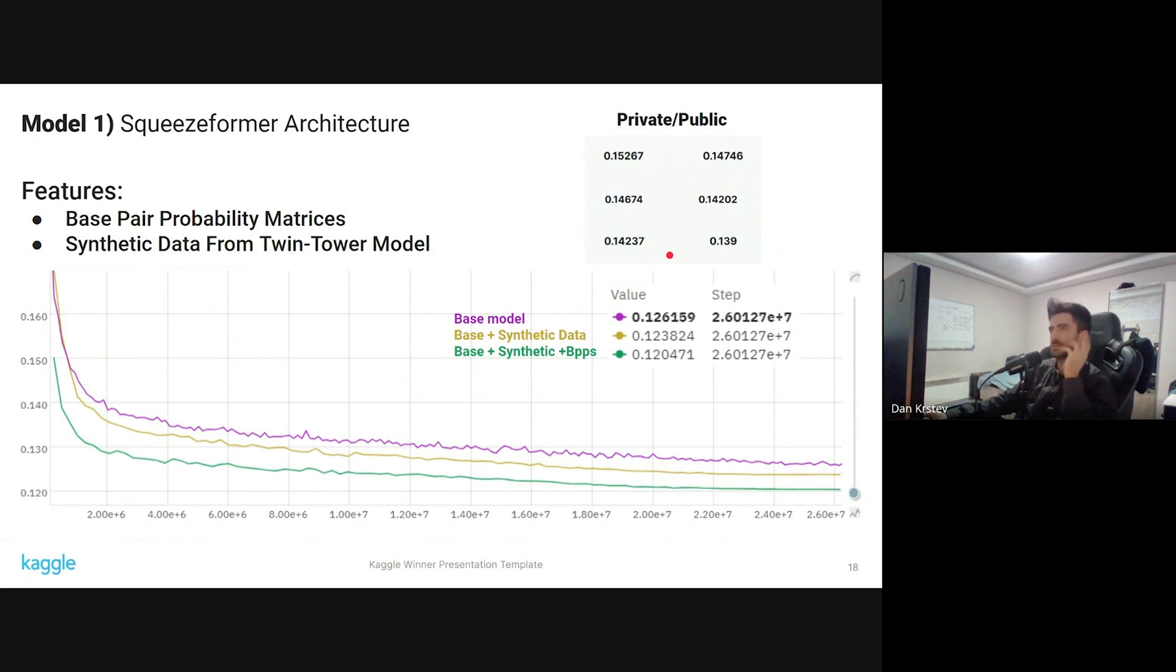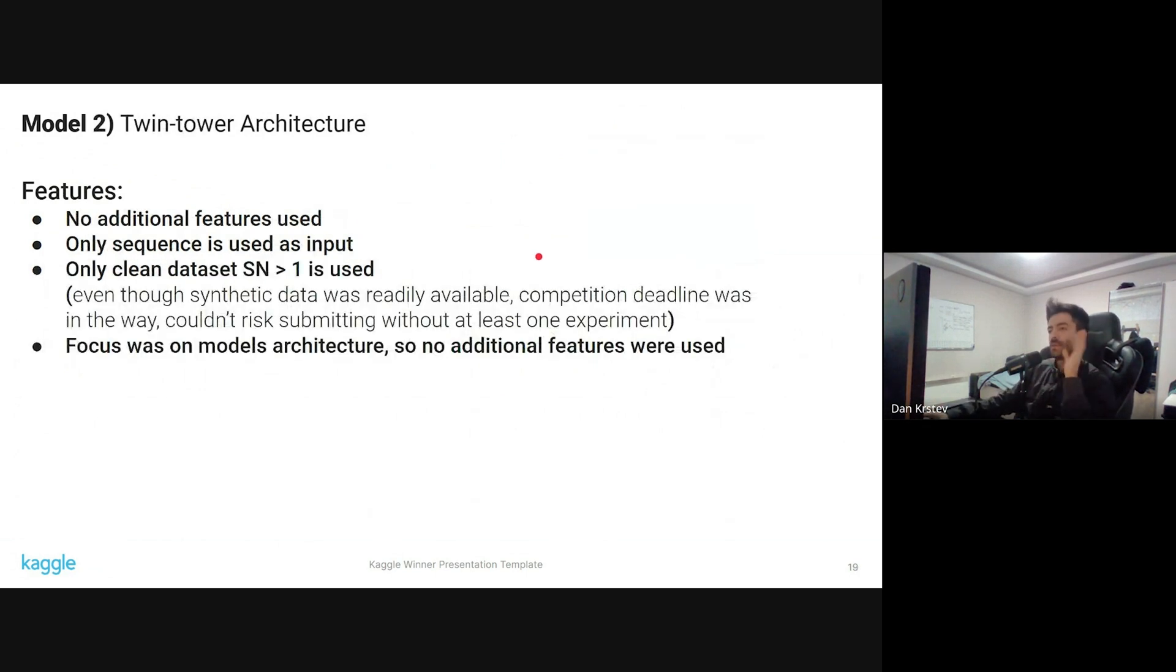The features that helped were the base pair probabilities and the synthetic data, and also the relative positional encodings. For the twin tower architecture, I didn't experiment with any features. As I said, the only feature used was the input sequences. So no additional features, only sequences input, only clean dataset. So the focus was more on the model's architecture and how to cleverly extract information. So there was no feature engineering.